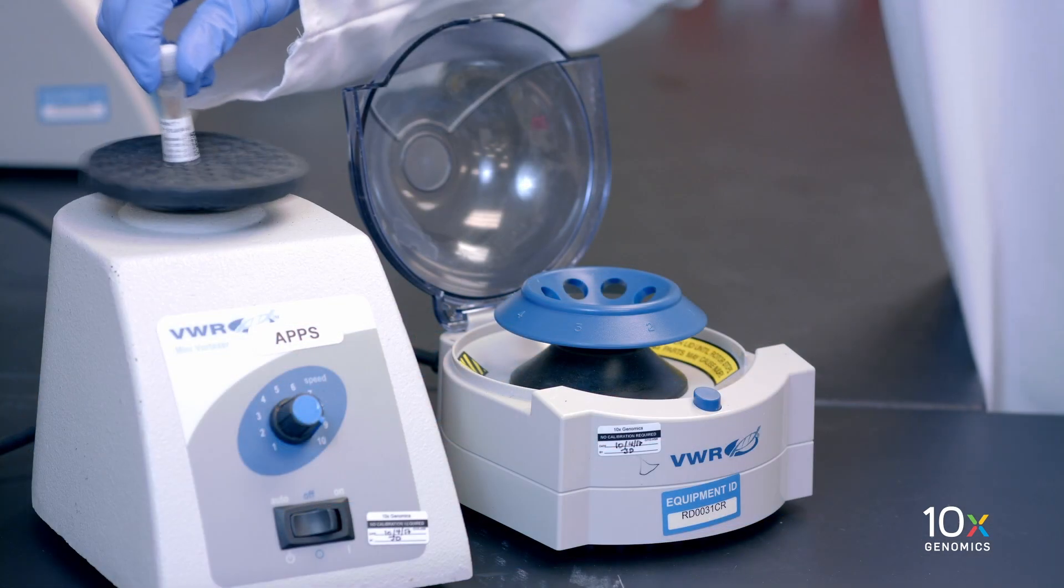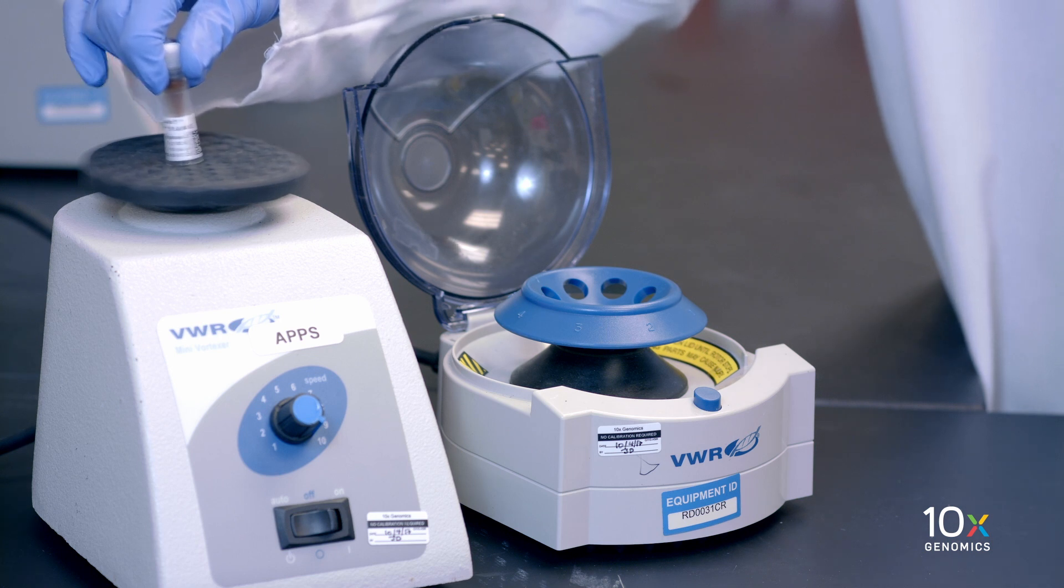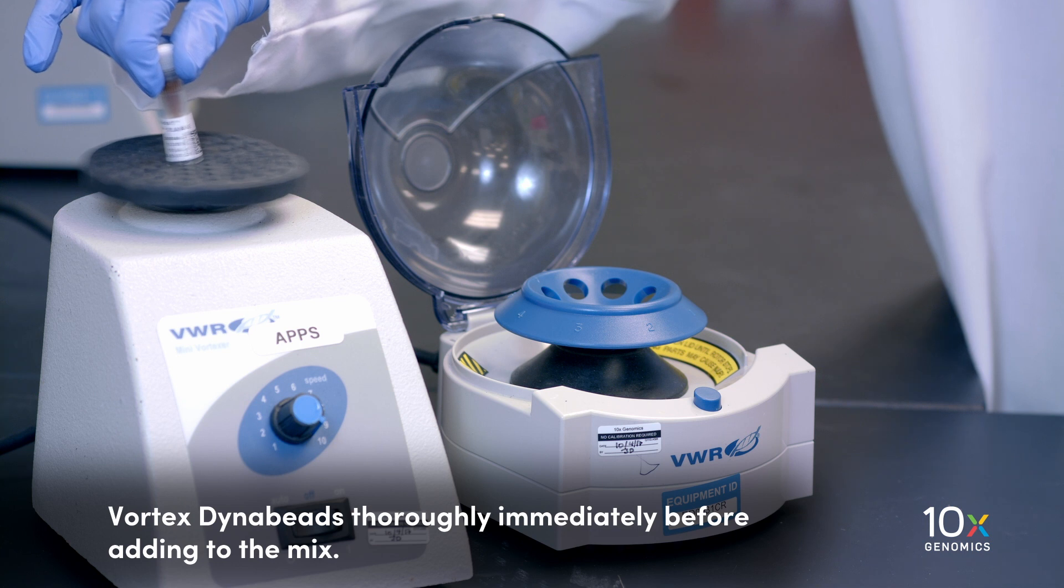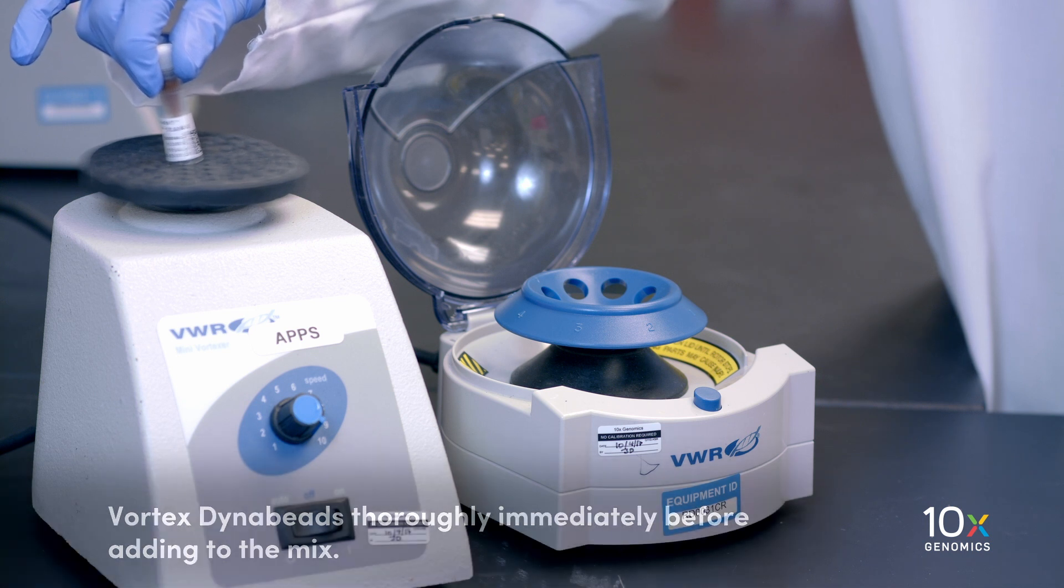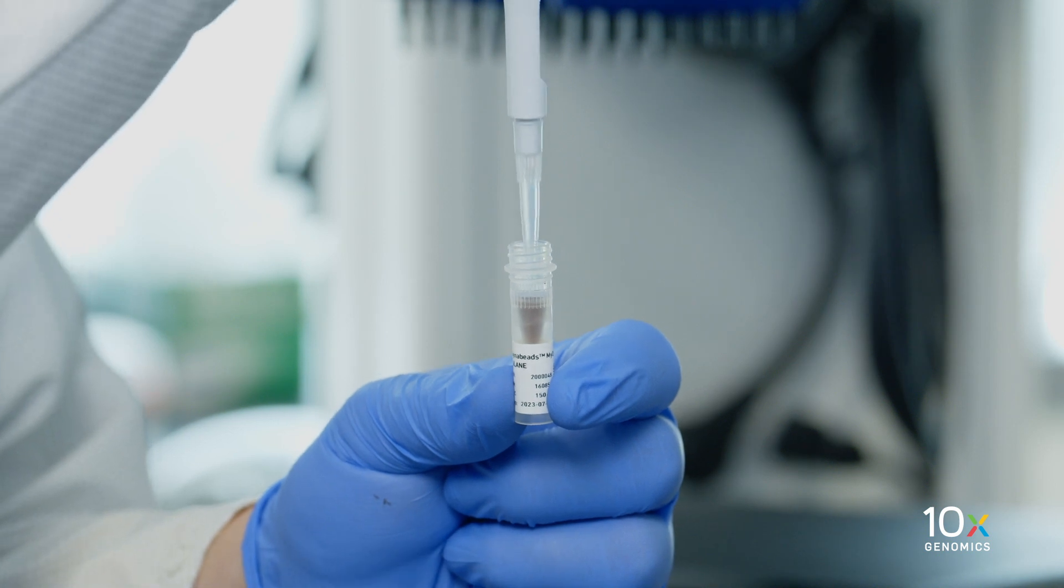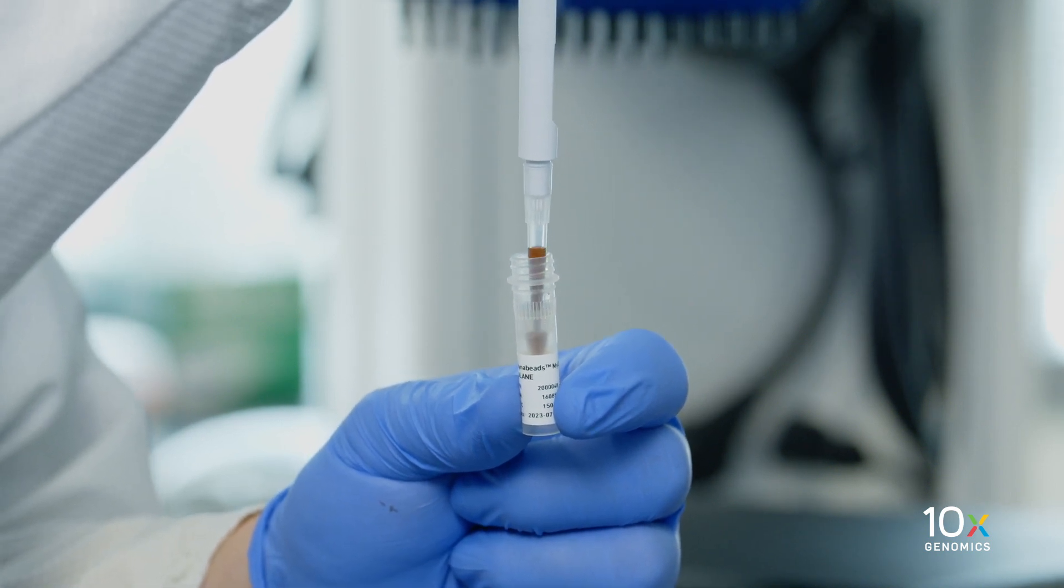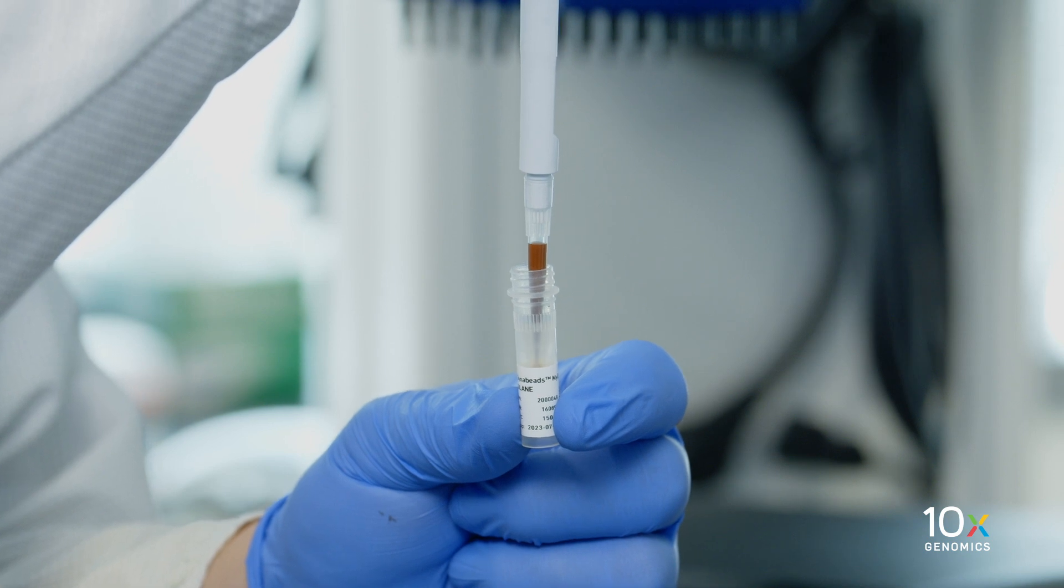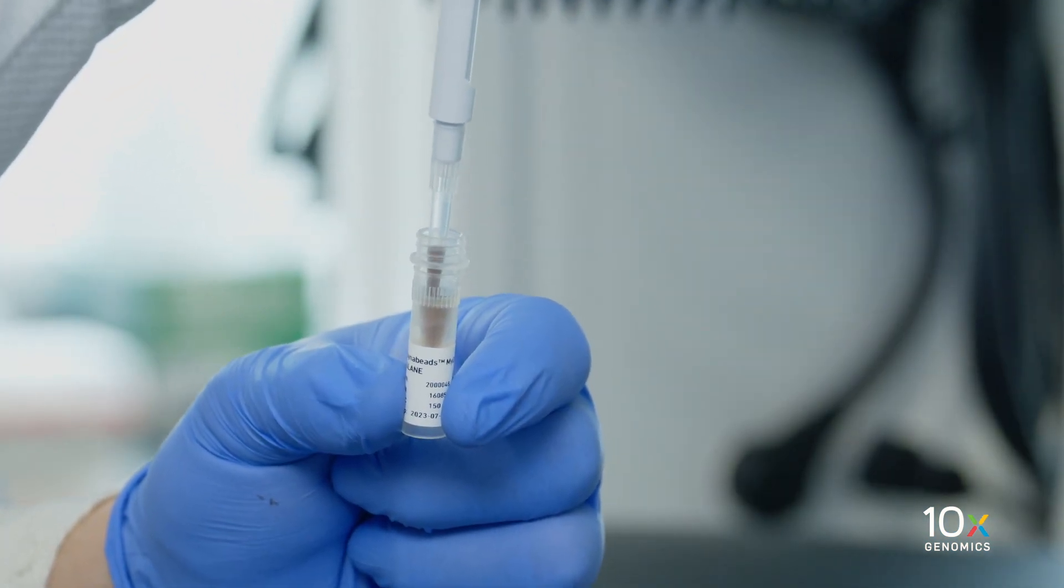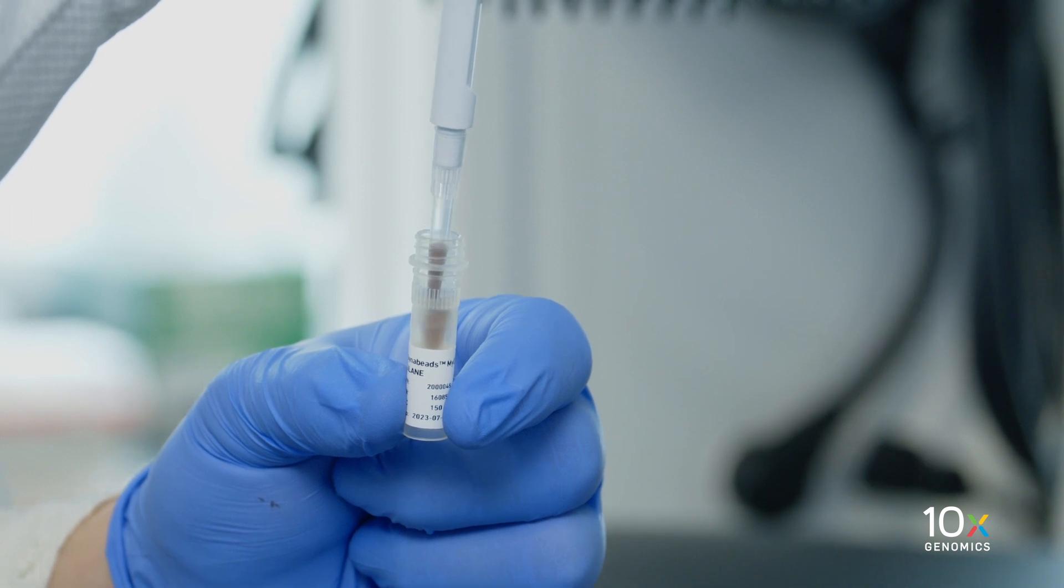Next, we vortex the DynaBeads for 30 seconds to resuspend them. Vortex the DynaBeads thoroughly immediately before adding to the mix. Aspirate the full liquid volume in the DynaBead tube with a pipette tip to verify that the beads have not settled in the bottom of the tube. If clumps are present, pipette mix to resuspend completely. Do not centrifuge before adding to the mix.